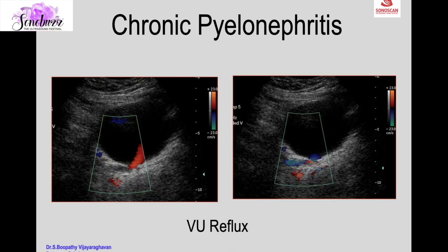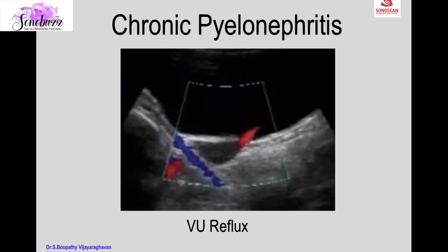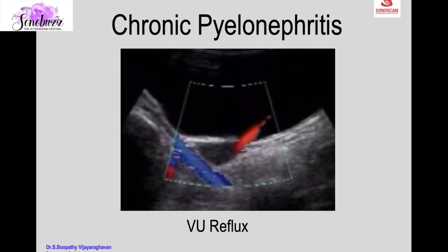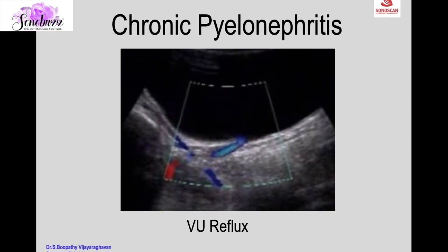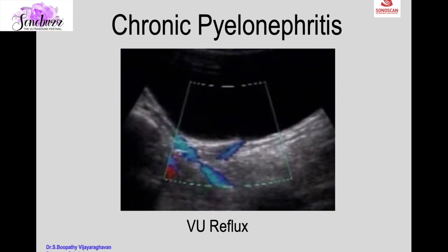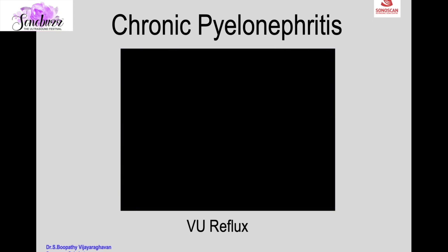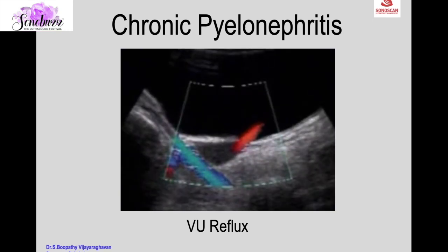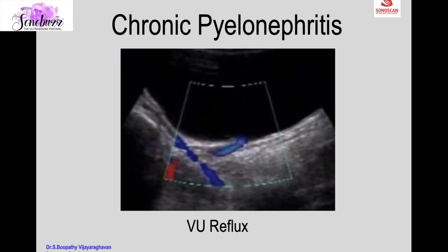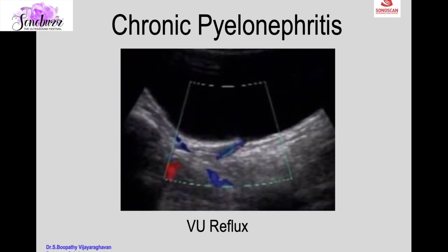Vesicoureteric reflux as a cause of chronic pyelonephritis can be evaluated with ultrasound of the ureterovesical junction, which shows the ureteric jet in red and reflux in blue on real-time color Doppler — the jet is followed by vesicoureteric reflux in blue.